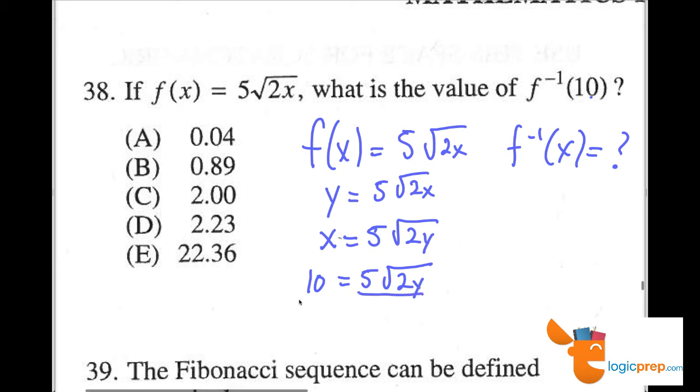Divide both sides by 5. Now I have 2 equals the square root of 2y. Square both sides and move it up to here. 2 squared over here is 4. Square root of 2y squared is 2y.